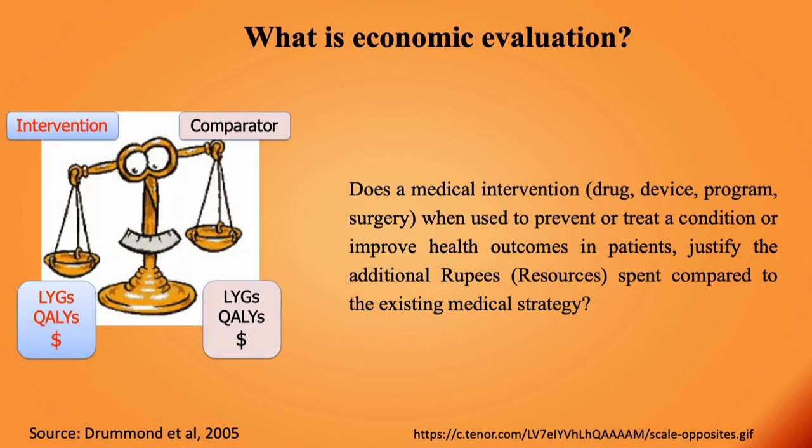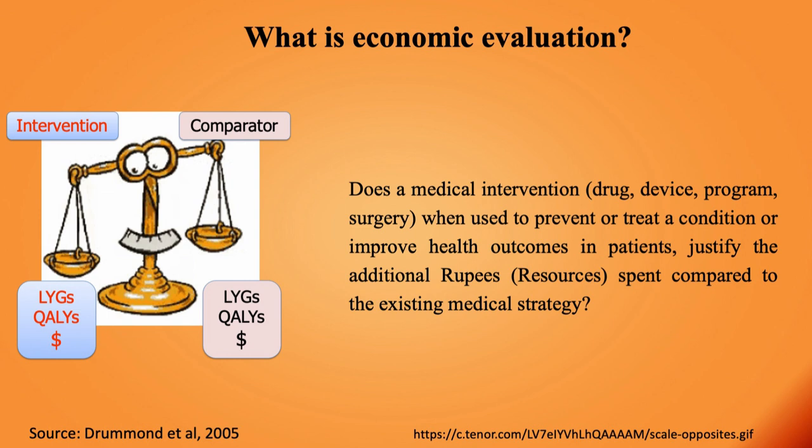When comparing two interventions, we call them the intervention and comparator. Costs are usually measured in monetary units — dollars, rupees, pounds, or whichever currency. Health outcomes are measured in terms of life year gains, quality-adjusted life years, number of fevers prevented, or number of diseases prevented by a vaccine. Any analysis comparing both costs and outcomes is called economic evaluation.